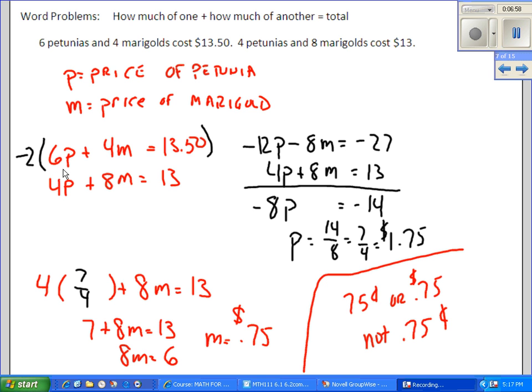So I bought 6 petunias plus 4 marigolds and spent $13.50. My neighbor bought 4 petunias and 8 marigolds and spent a total of $13.00. And I'm yet again multiplying the first equation by negative 2. Again, that is not always what we need to do. But by doing that, I eliminate the marigolds from the equation. I can solve for the petunias and then go back and find the cost of the marigolds.